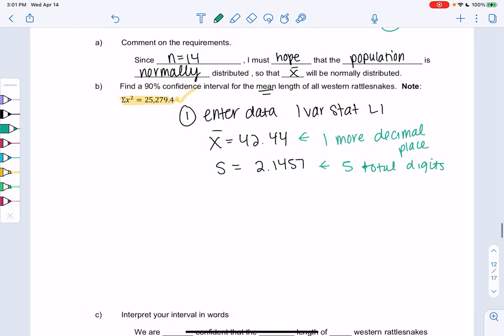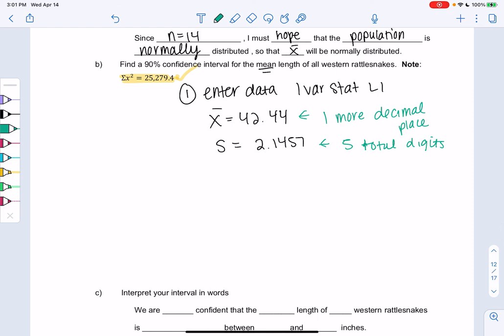Alright, so let's go ahead and find a confidence interval. So we're going to find that T curve. It was 90%, so we put 90% in the middle.